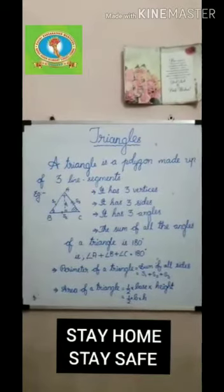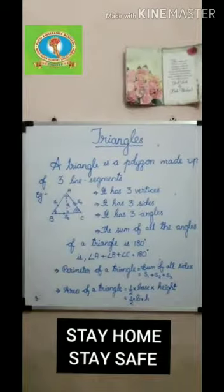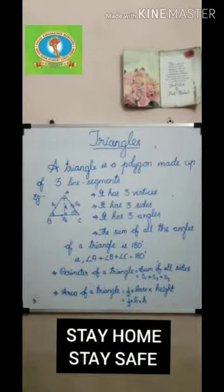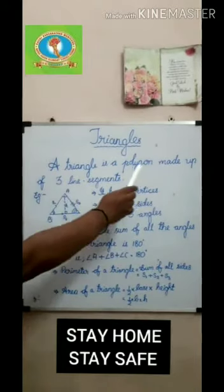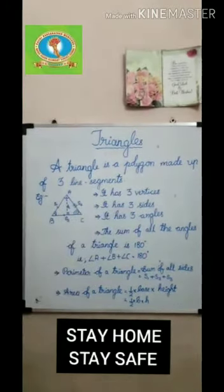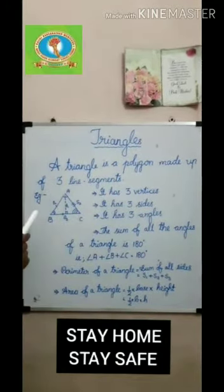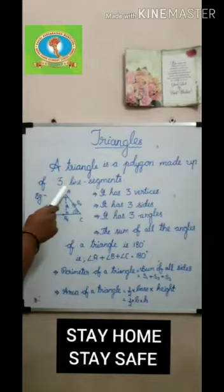Happy morning students. Today we are going to learn about triangles. A triangle is a polygon made up of three line segments. Here is an example: a triangle ABC.